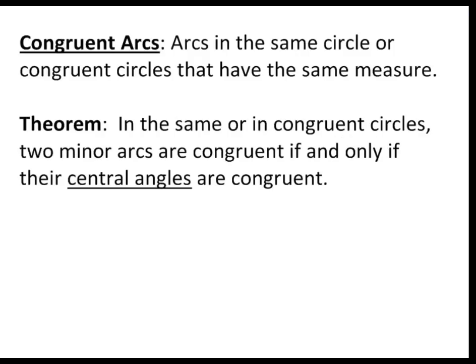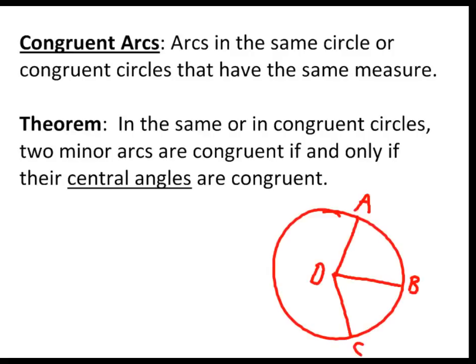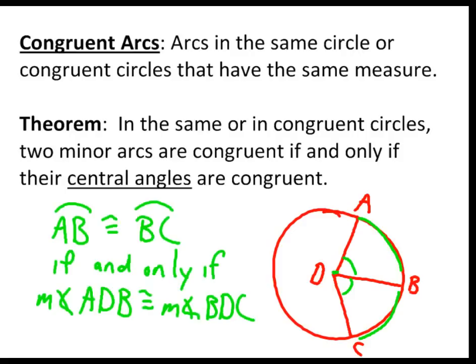Congruent arcs are exactly what they sound like — congruent means they have the same measure. So two arcs that are congruent are two arcs that have the same measure. Our theorem says: in the same circle or congruent circles, two minor arcs are congruent if and only if their central angles are congruent. So arc AB and arc BC are only congruent if the measures of angles ADB and BDC are the same.